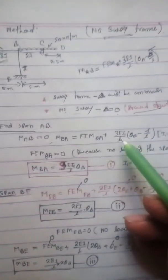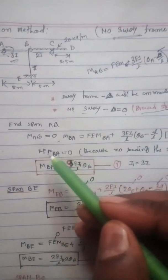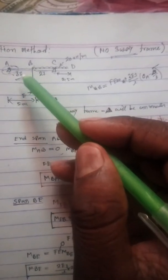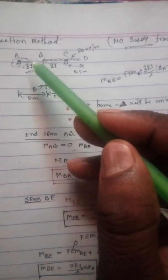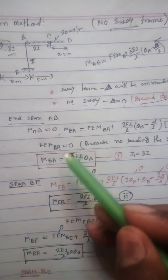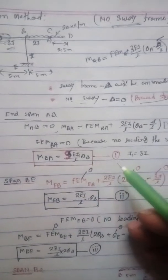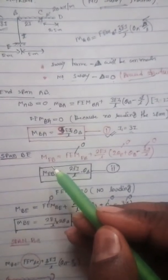Now for M_BA: M_BA equals FEM_BA plus 3EI₁/L into (theta_B minus delta/L). Here I₁ equals 3I, so it becomes 9EI/L. Since this span has no loading, FEM_BA equals zero. Therefore our equation becomes M_BA = 9EI/L × theta_B. This is equation number one.